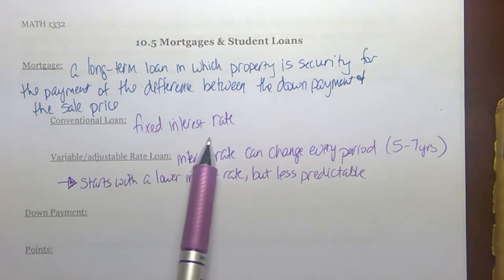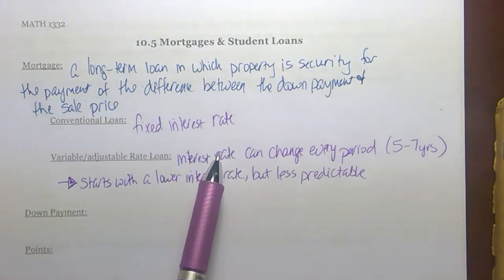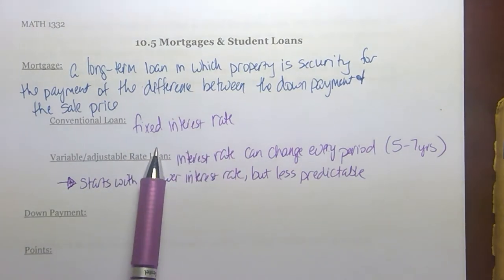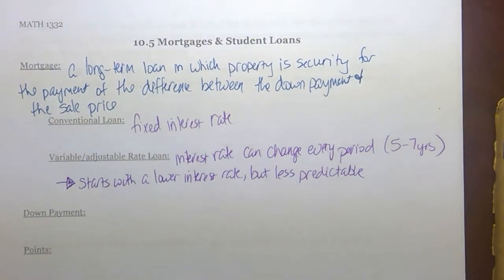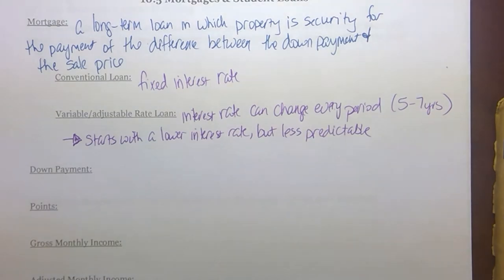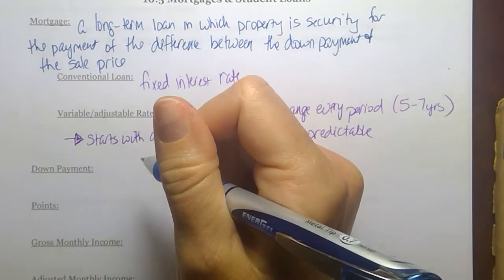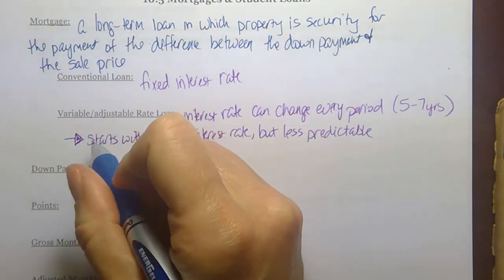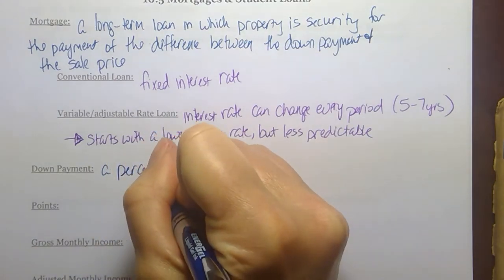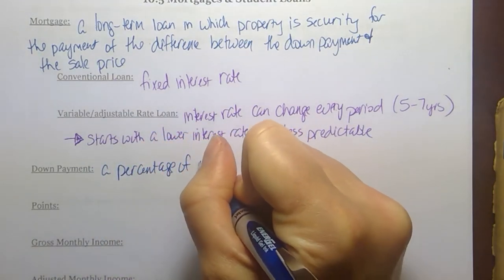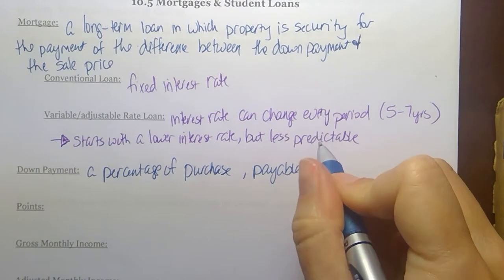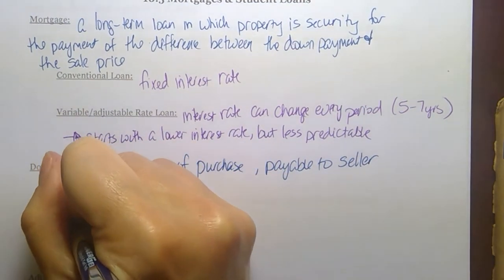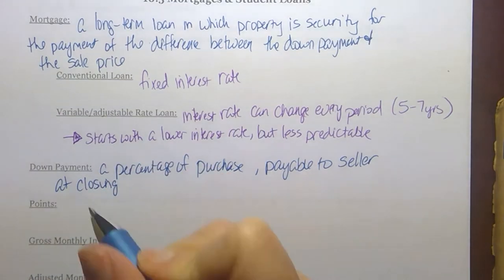A fixed interest rate loan — and you can tell I'm not a risk taker — is something I'm a big fan of, because I know what is expected of me over the life of the loan and don't have to worry when the period is up whether my payment is going to go up. Let's go back to some vocabulary. You already know down payment: it's a percent of the purchase price that you pay to the seller at closing.